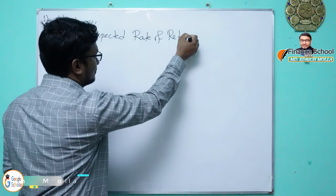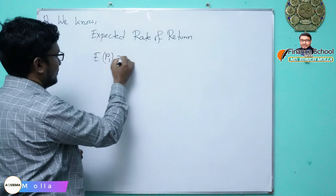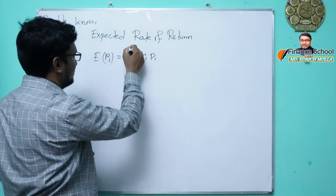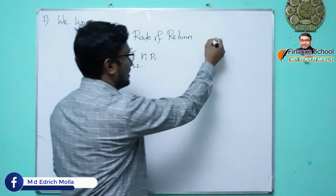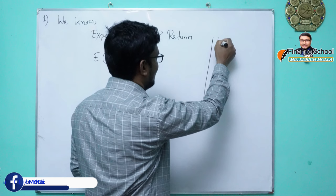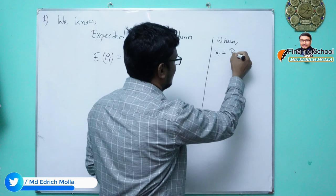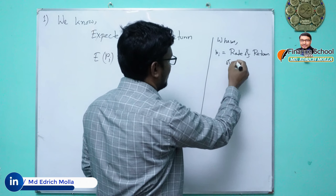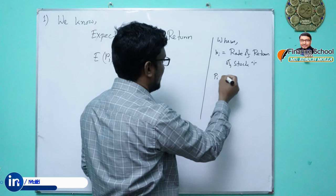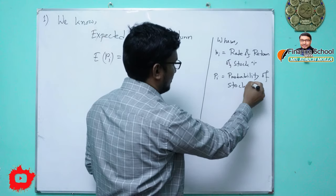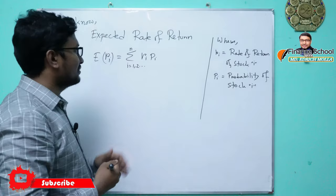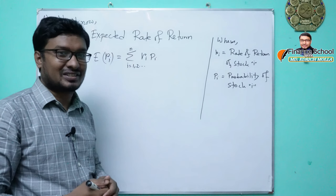The expected rate of return, which is denoted by E(R)i, equals the summation of ri times pi, where i equals 1 to n. Here ri means the rate of return of stock i, or any stock, and pi is the probability of that return. This is the formula we have to use to find out the expected rate of return.